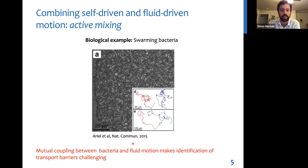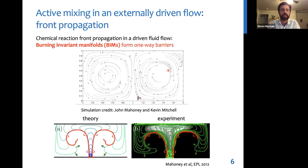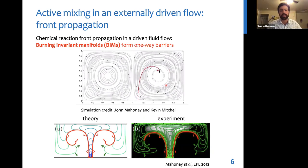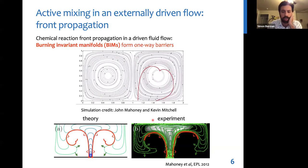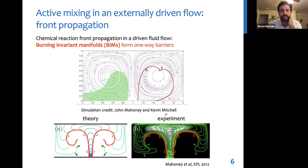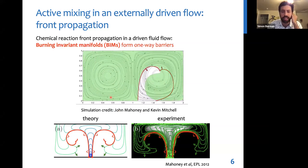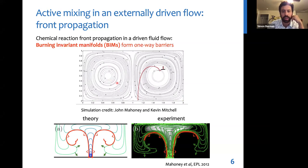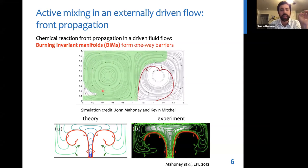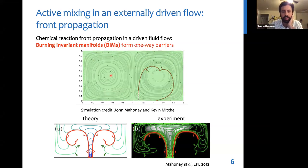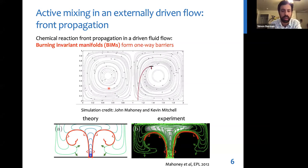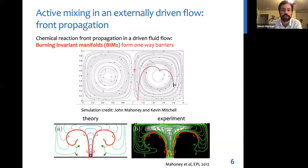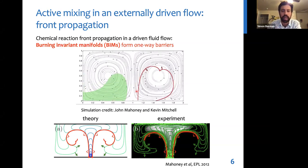And actually, a very similar problem has already been intensely investigated, especially by Kevin Mitchell and Tom Solomon with John Mahoney several years ago. And that is the problem of chemical reaction front propagation in an externally driven flow. So for example, if you have a vortex flow, like we saw in the beginning, that's indicated by these black tracer particles tracing out circles, and you initiate a chemical reaction in this fluid, the chemical reaction, even without the flow would spread throughout the fluid.